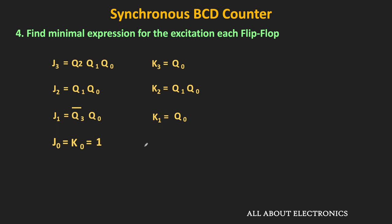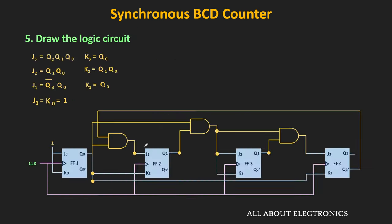The next step is to draw the logic circuit. This is the logic circuit of the synchronous BCD counter. As you can see, J0 and K0 are both equal to 1. K1 and K3 are connected to the Q0 output. Three AND operations are performed with the help of AND gates to implement J3 = Q2·Q1·Q0, J2 = Q1·Q0, and J1 = Q3'·Q0.